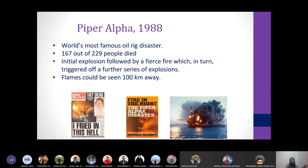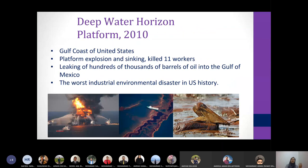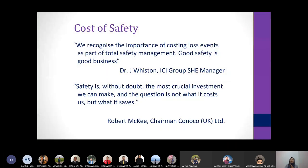We then looked at Piper Alpha in 1988, an oil rig disaster. After that, I introduced the BP Texas City refinery accident, which happened in 2005, and then five years later, another BP accident occurred on the Deepwater Horizon platform in 2010 at the Gulf Coast of the United States — the worst industrial environmental disaster in American history.